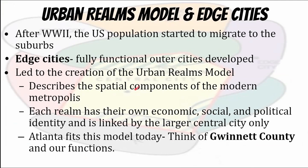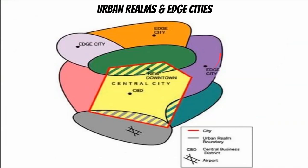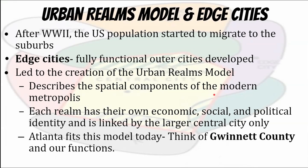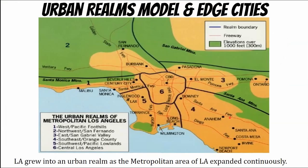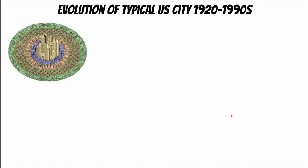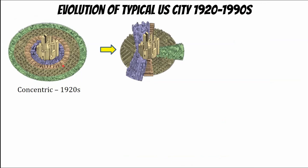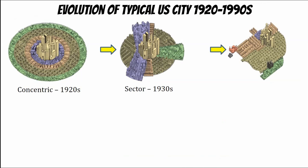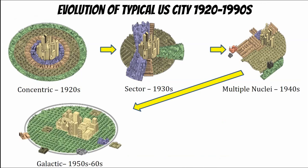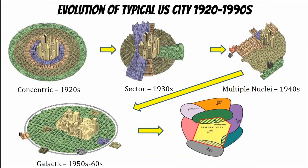Today, most American cities use what's known as urban realms and edge cities. The urban realms model features edge cities becoming almost more important than the main CBD, developing their own flavor. Think of Atlanta — there are suburbs that have become edge cities all around the main city, each with different tasks and nodes that fit together. Gwinnett County in and around Atlanta is like that. L.A. also has lots of urban realms. The evolution goes: 1920s concentric, 1930s sector, post-WWII multiple nuclei and suburbanization, then galactic, transforming into the urban realms model.